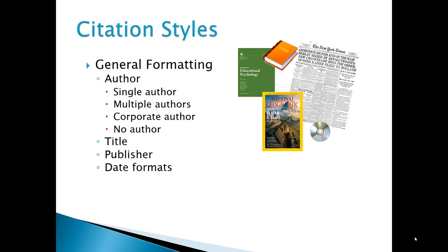For example, only a book has publisher information, and a journal uses only the year and the date, while a magazine has the complete date. As you explore your citation style, you will become familiar with the requirements for each type of source and be able to identify them.